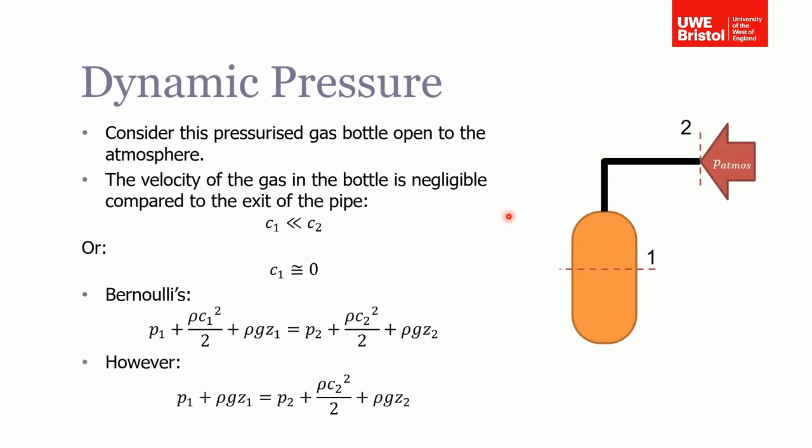In this example, we've got a pressurized gas bottle which is open to the atmosphere. We're going to see how we could cancel the dynamic pressure terms. It's a gas in this example, and assuming it's flowing at low speeds, we can use Bernoulli's.